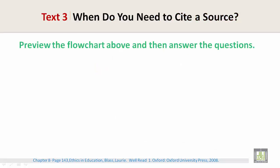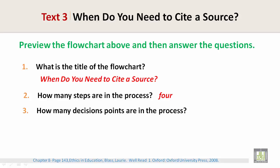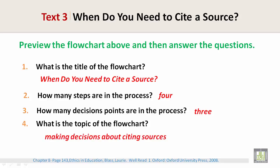Let's look at some questions and answers. What is the title of the flowchart? When do you need to cite a source? How many steps are in the process? Four. How many decision points are in the process? Three. What is the topic of the flowchart? Making decisions about citing sources.